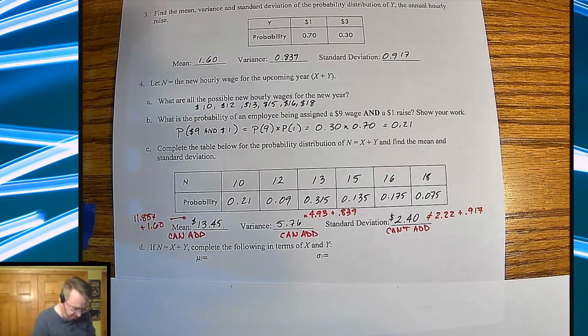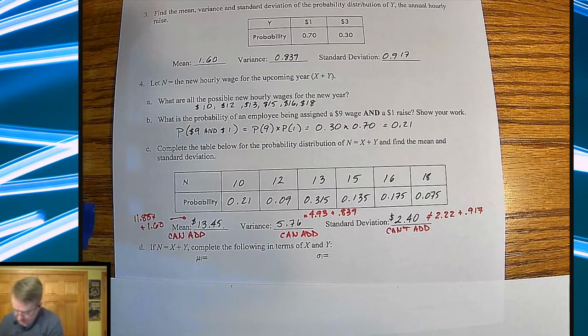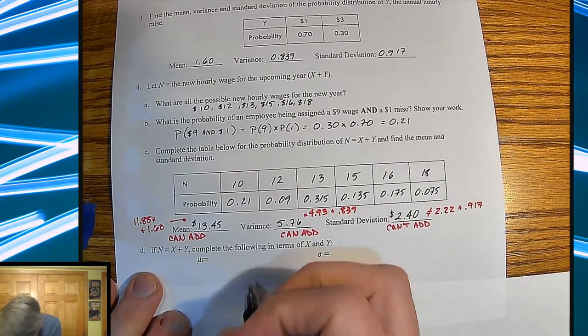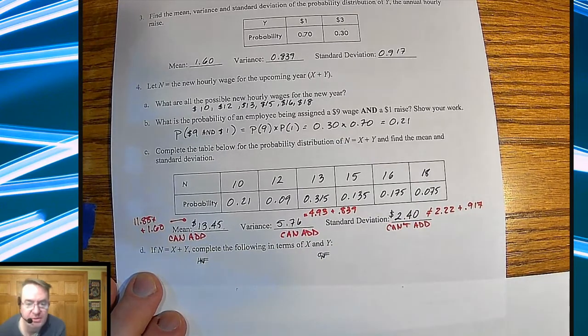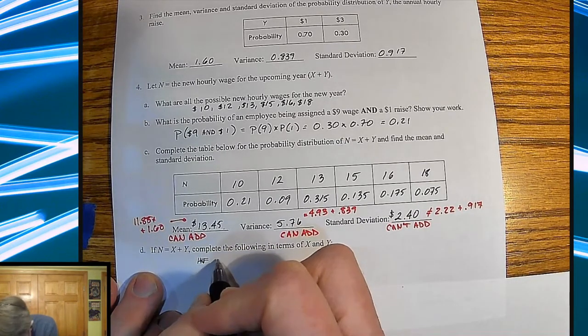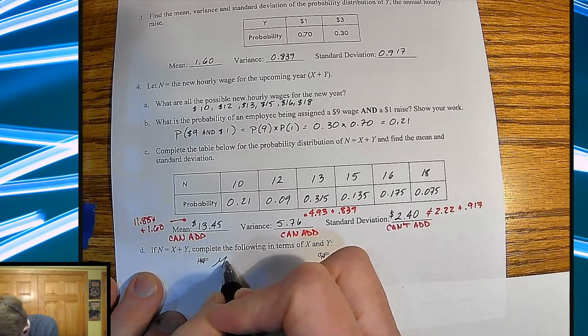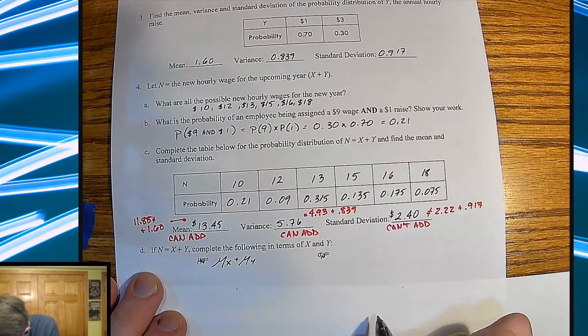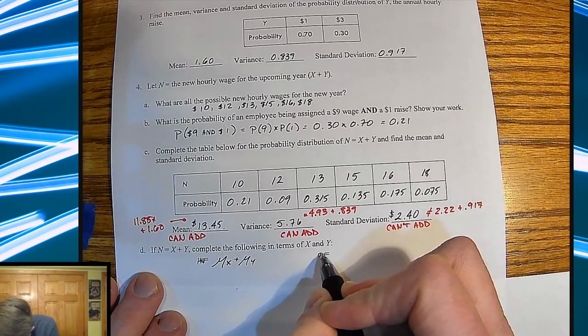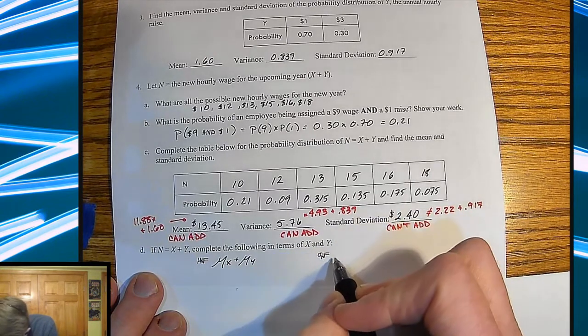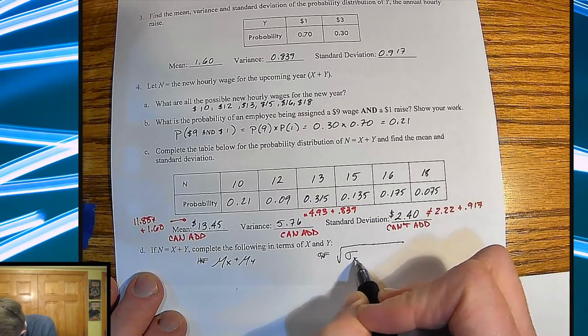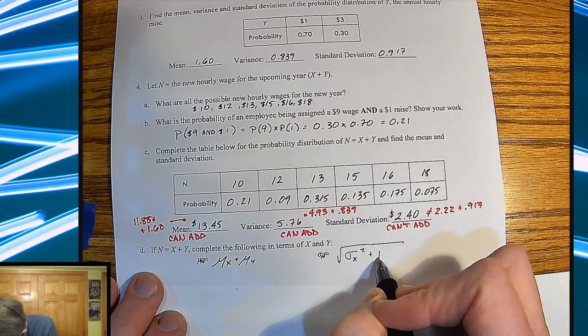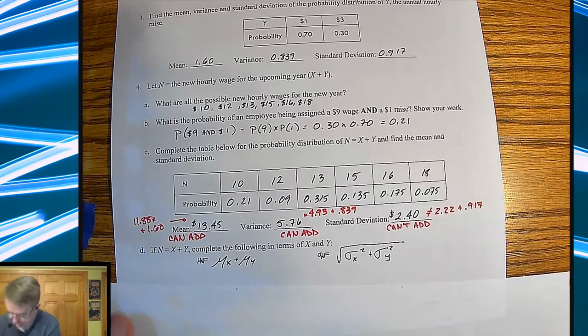So just as kind of a reminder, so if N is equal to X plus Y, oh, these should be little N's here. I don't know why those didn't come through on math type. My apologies. So the mean of N is going to equal the mean of X plus the mean of Y. And the variance of X, the standard deviation of N is going to equal the square root of the standard deviation of X squared plus the standard deviation of Y squared.